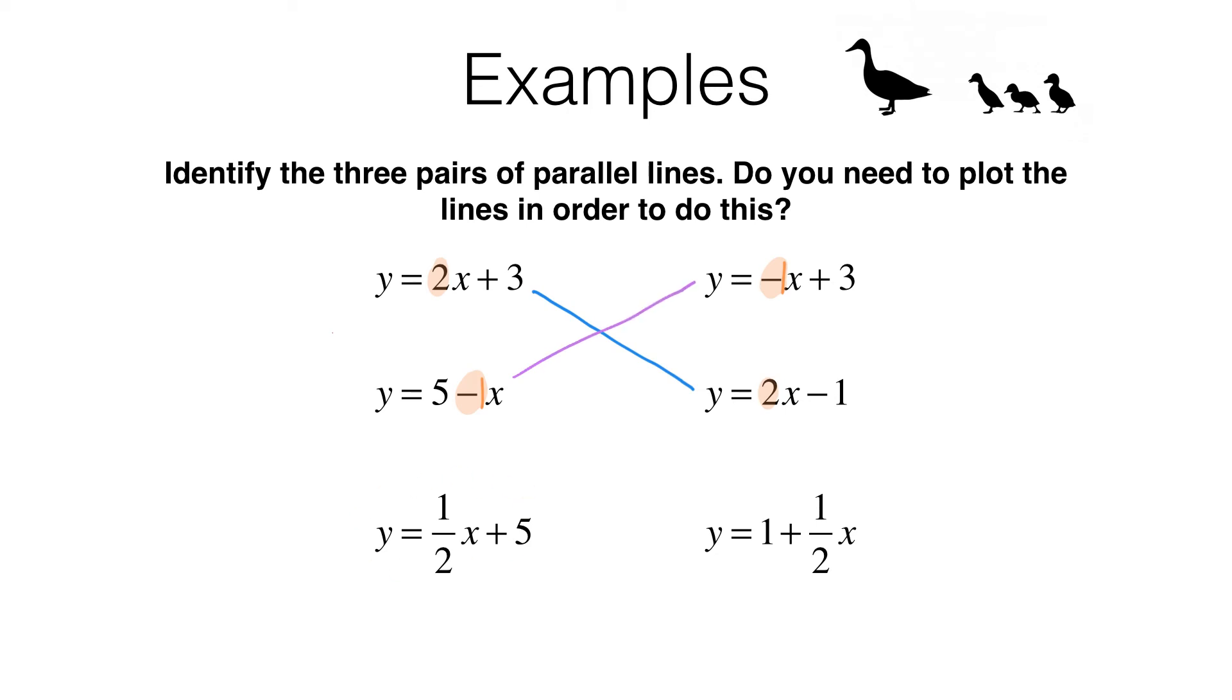Finally let's look at these two. We know they're going to match because we were looking for three pairs but let's just check. y equals a half x plus 5. The gradient of that line is a half. y equals 1 plus a half x. The gradient of that line is also a half and because they've got the same gradient that means those two lines are parallel.